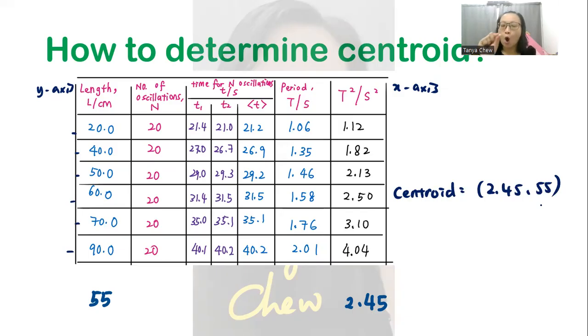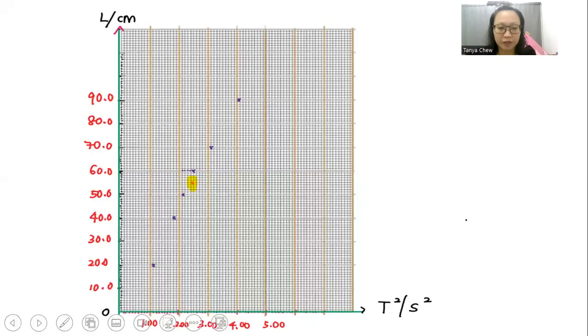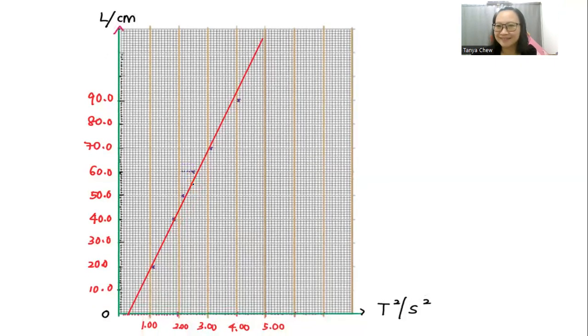You can plot this centroid on your graph, but never plot your centroid as x because this symbol represents your readings, not the centroid. If you want to plot the centroid on the graph, just put a dot here. Then use your ruler, take out the ruler and just adjust here and there. Make sure that the best fit line must pass through centroid and at the same time, make sure that all the readings are very close to your best fit line. So this is my best fit line.